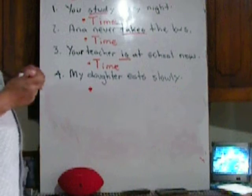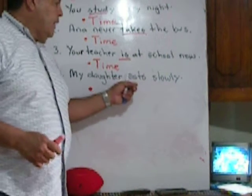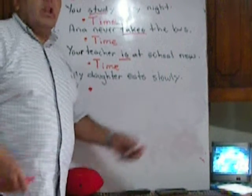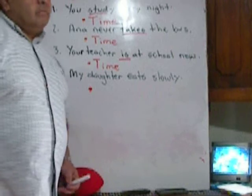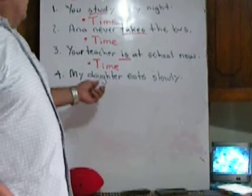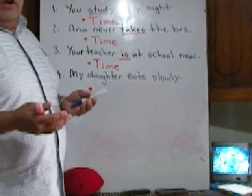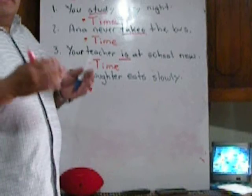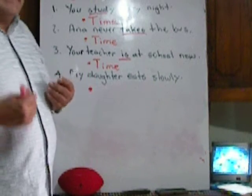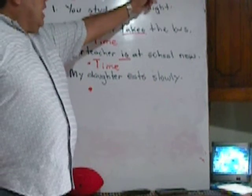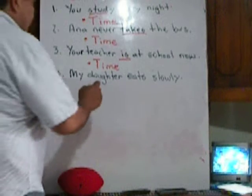And the last sentence: 'My daughter eats slowly.' Does it tell me when does my daughter eat? No. It's telling me how she eats. So this is an adverb of manner.